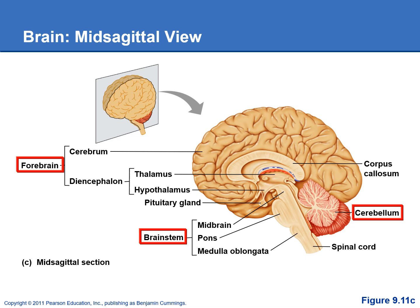Then we have the brainstem, which we divide into the midbrain — the very top of the brainstem is the midbrain. Right below that is the pons. The way I remember that is the pons pouches out — pons and pooch both have a P. And then the medulla oblongata is the bottom part of the brainstem, which then joins with the spinal cord.